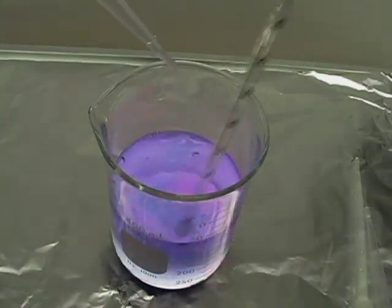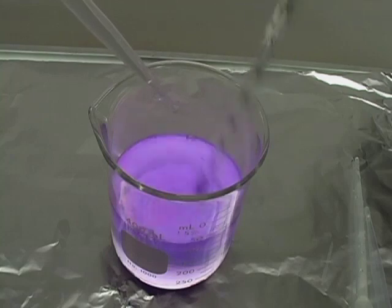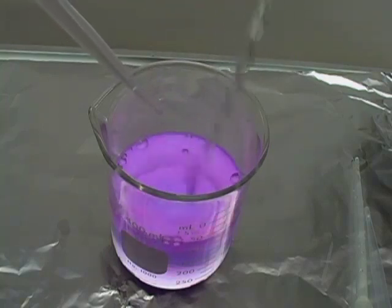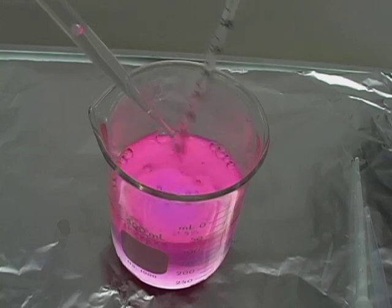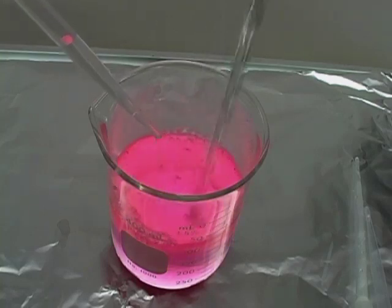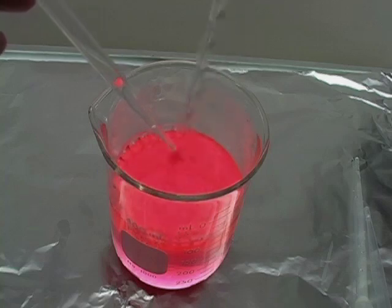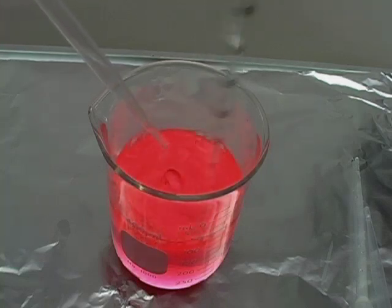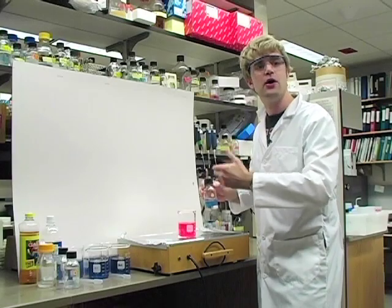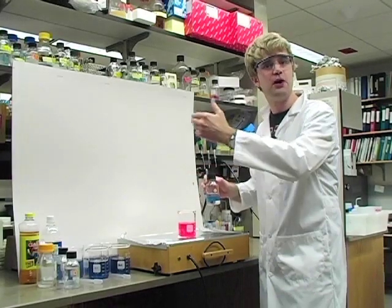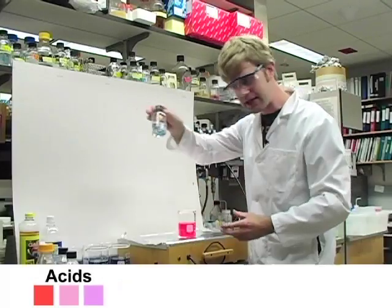I'm going to take a chemical and add little drops of it to the indicator. See, these drops make a very light purple, and there's some pink, and it gets pinker and pinker the more I add. And now it gets darker and darker, and I eventually get a really deep bright red. If we add a chemical to this indicator and it makes it redder and redder — starts with purple, then goes to pink and goes to red — we call it an acid. So this chemical here is an acid.